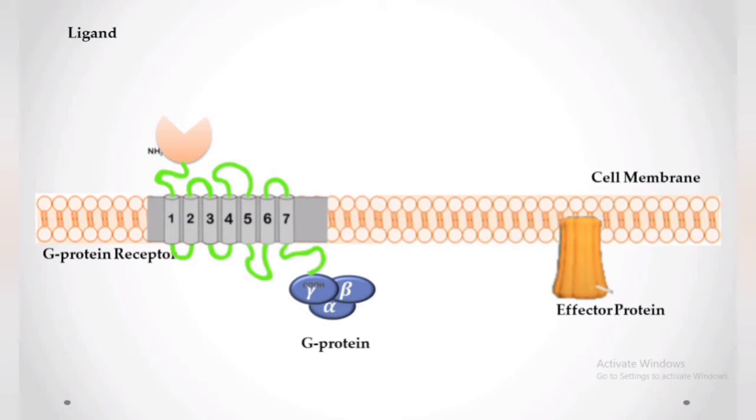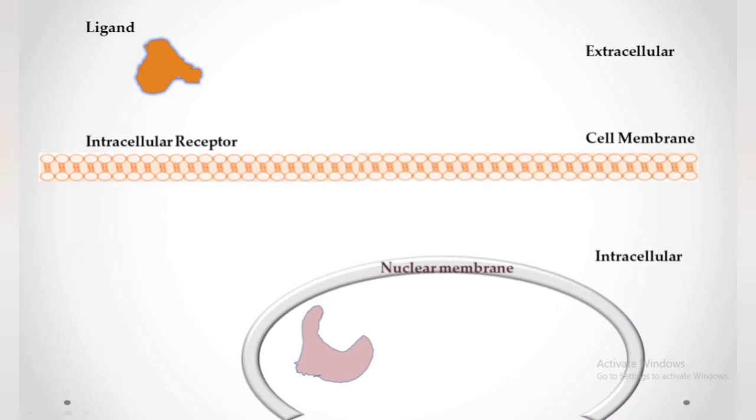With G-protein coupled receptors, first the ligand binds to the receptor, which causes structural change in the receptor and internal change in the shape of the G-protein, which converts GTP to GDP. This leads to separation of the alpha subunit from the beta and gamma subunits. This in turn activates other enzymes and effector proteins.